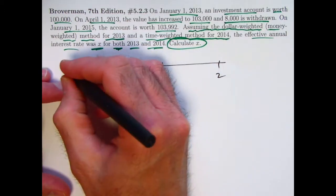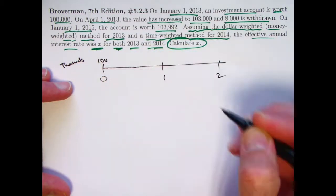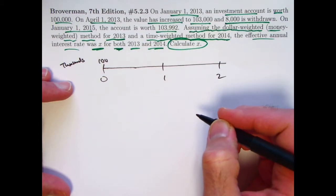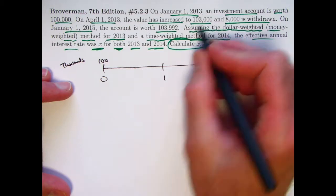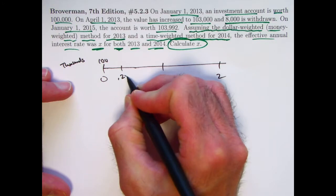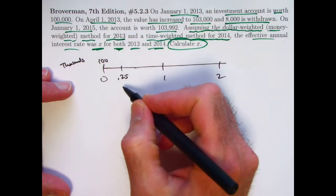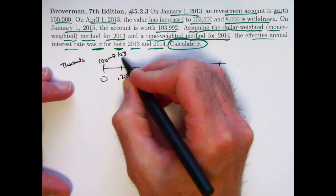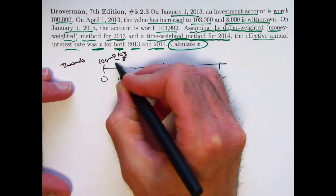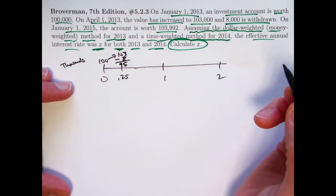Let's put these amounts to be in thousands. So we would have 100,000 at time zero. That is growing to 103,000 at time 0.25, right? April 1st is three months into the year. One quarter of the way through the year, we'd have 0.75 or three quarters of the year left. Its value has gone up to 103,000, but we withdraw 8,000, and so the new balance after that withdrawal is 95,000.